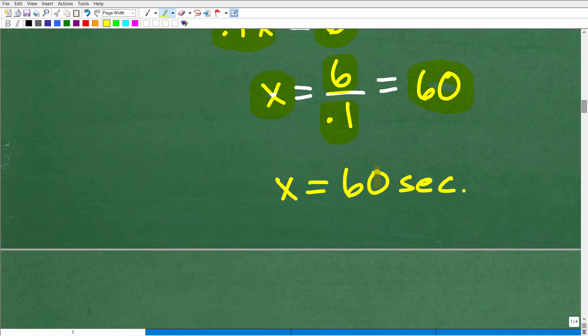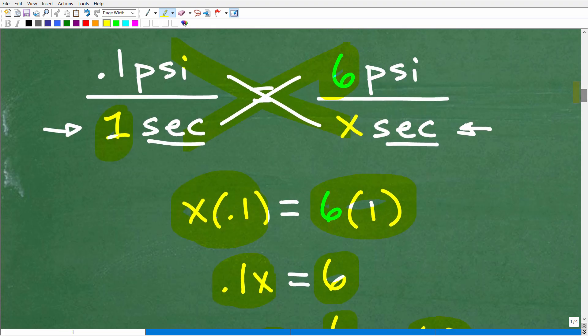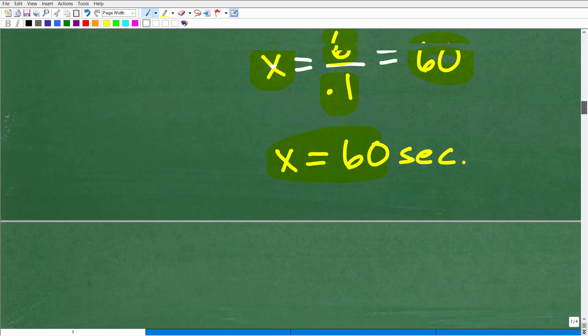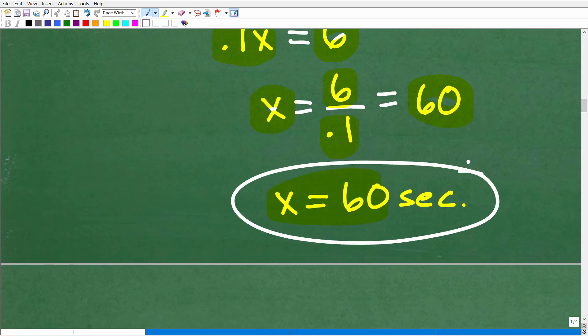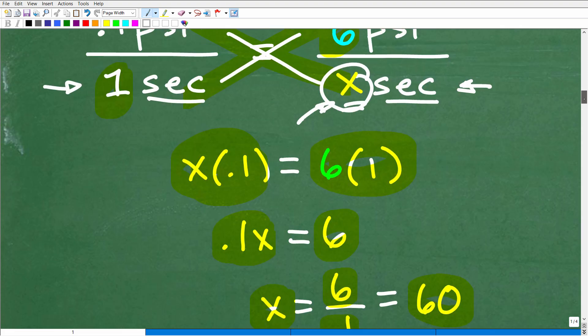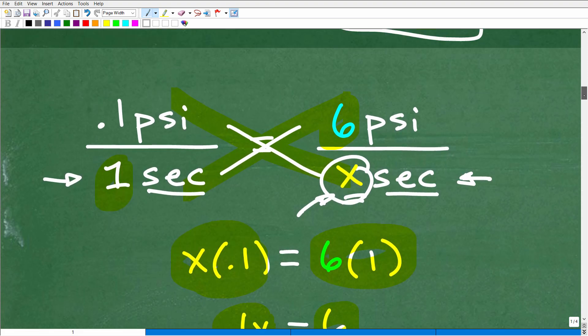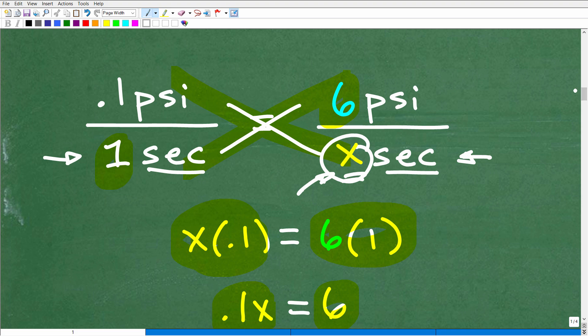So 6 divided by 0.1 is 60. So X equals 60. But what is X? Remember, when we set up our proportion, X represented how many seconds. So X is going to be in the unit of measure of seconds. X equals 60 seconds. That's how many seconds it's going to take for the tire to go from 36 psi down to 30 psi at this rate of change.